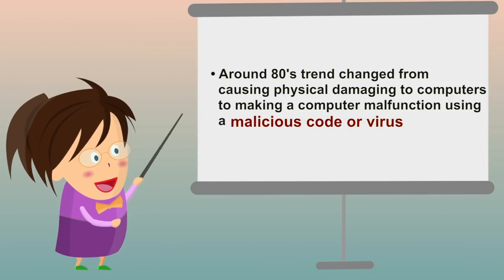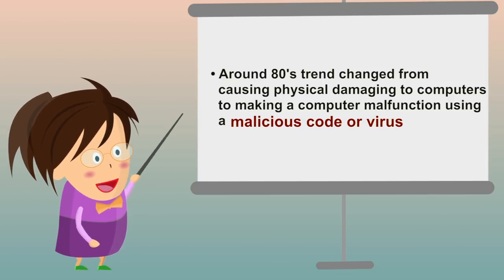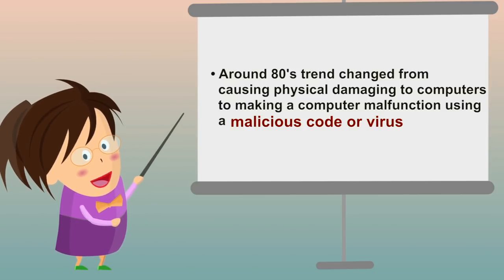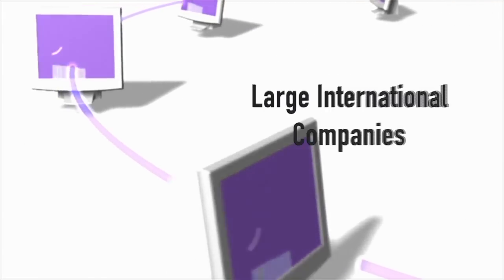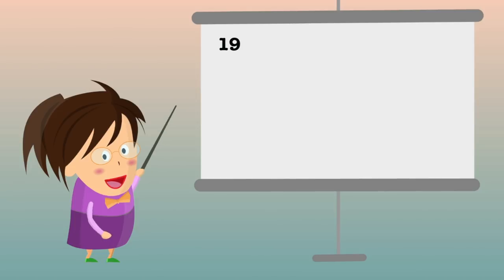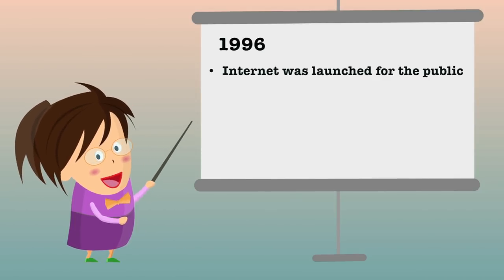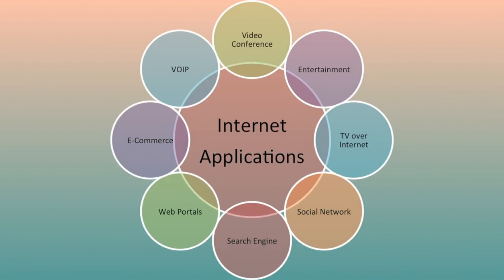Around 1980s, the trend changed from causing physical damage to computers to making a computer malfunction using a malicious code called virus. Till then, the effect was not so widespread because internet was only confined to different setups, large international companies and research communities. In 1996, when internet was launched for the public, it immediately became popular among the masses and they slowly became dependent on it to an extent that it changed their lifestyle.